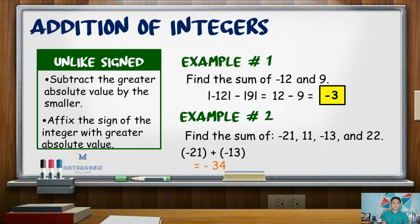For the positive numbers, 11 plus 22 equals positive 33. Adding both sums — negative 34 and positive 33 — gives a result of negative 1.